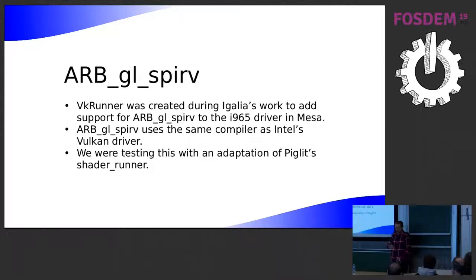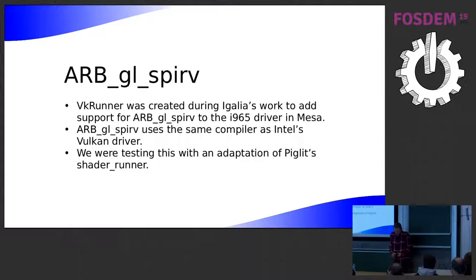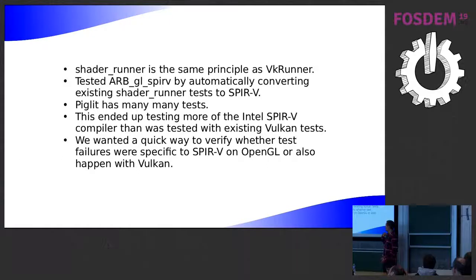When we ran into a problem on the OpenGL SPIR-V, we often weren't sure whether it was a problem introduced on the SPIR-V extension or just an existing problem with the SPIR-V compiler. So we really wanted a quick way to run the shader tests we had from ShaderRunner using the Vulkan API as well. VKRunner was a way to have a utility that works as close as possible to the ShaderRunner script format, but runs on Vulkan.